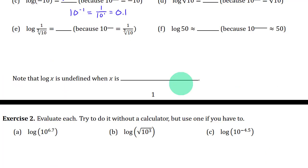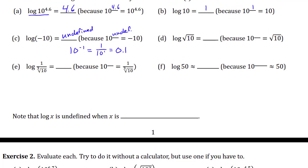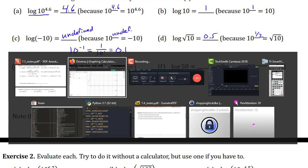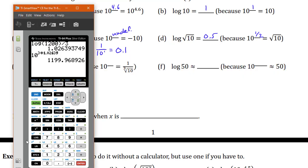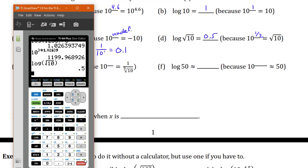What about log of the square root of 10? That's going to be whatever the exponent of 10 is that's the same as the square root of 10. That would be 1/2 or 0.5. By the way, you can always check these with your calculator. If you do log of the square root of 10, you get 0.5. So that works.